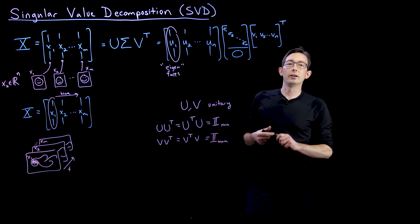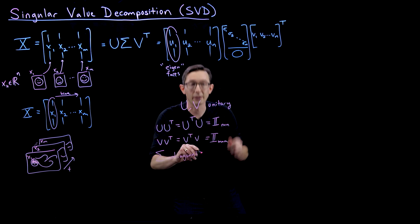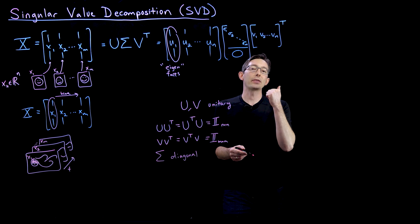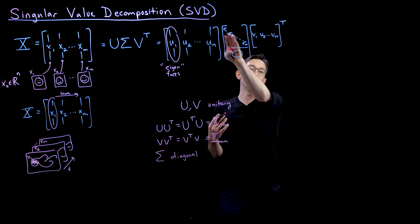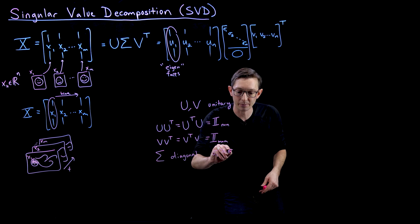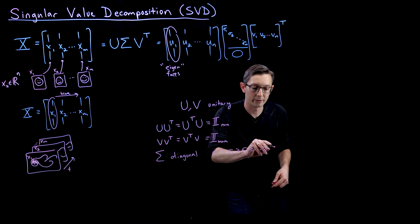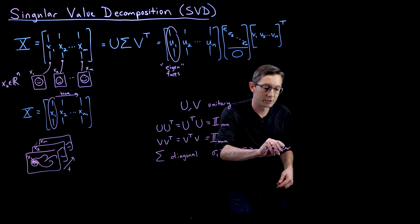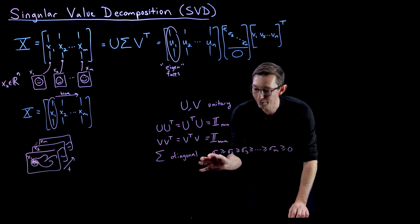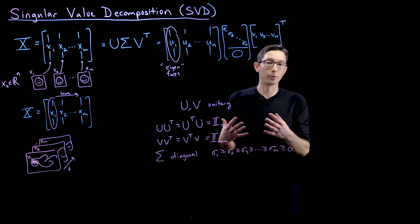So that's important. The other important thing to note is that sigma is diagonal, which I've already described here. And it's non-negative and hierarchically ordered. So it's in decreasing magnitude. So sigma one is greater than or equal to sigma two is greater than or equal to sigma three, and so on and so forth is greater than or equal to sigma M, which is again greater than or equal to zero. So they're all non-negative. Some of them could be zero, but sigma one is always greater than or equal to sigma two is greater than or equal to sigma three, and so on and so forth.